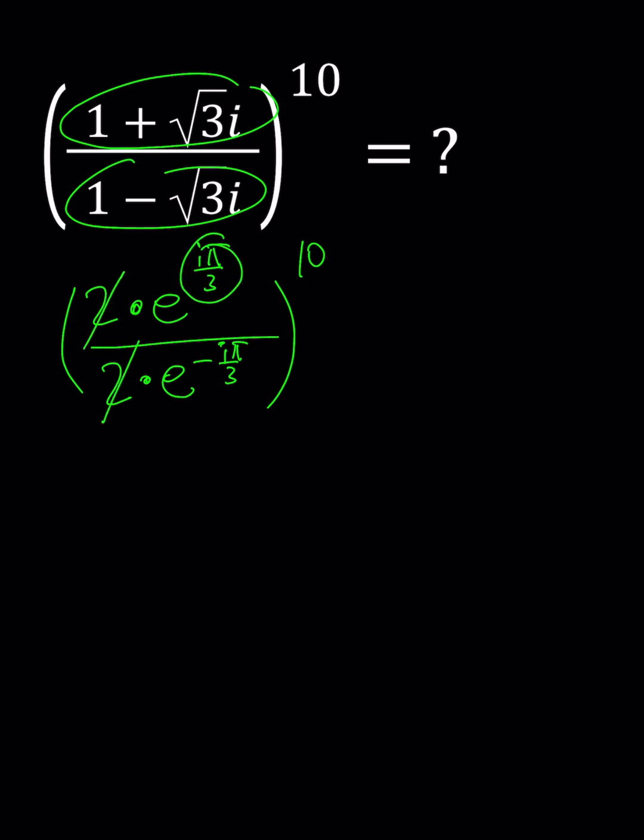2 cancels out. We're supposed to subtract the arguments because of exponential rules. This gives us e to the power 2i pi over 3.